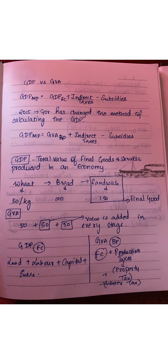In India, normally we use the formula GDP at market price. Market price is the demand side. Factor cost is the supply side. The GDP at market price formula is: GDP at factor cost plus indirect taxes minus subsidies.